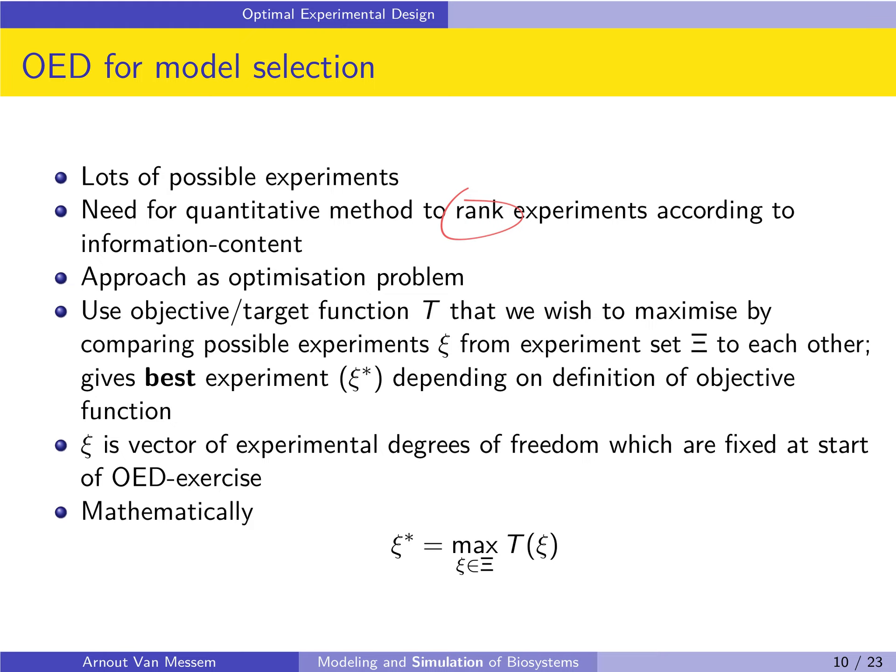Each of the experiments ξᵢ is characterized by a set of degrees of freedom: where, how often, how long, what, and so on. We will vary these degrees of freedom between the different experiments. We have all those different experiments, we will compare them to one another, and then based on our objective function we will determine which of the experiments is the best experiment, so which set of degrees of freedom gives the best conditions for performing the experiment.